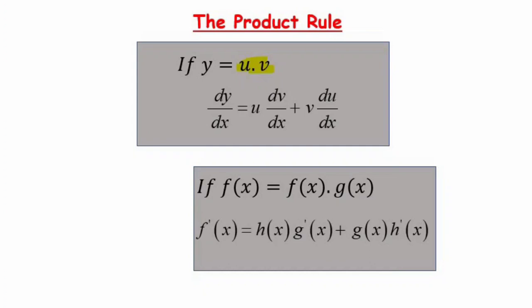Similarly, if we have h(x) multiplied by g(x), then f'(x) equals h(x)·g'(x) plus g(x)·h'(x). We copy h(x) and differentiate g(x) to get g'(x), then copy g(x) and differentiate h(x) to get h'(x). That is the formula we must follow for the product rule.